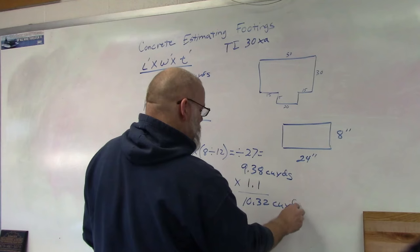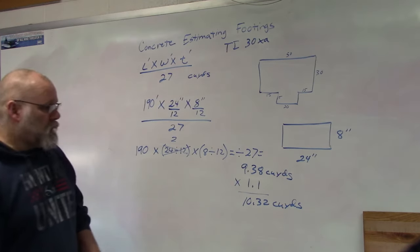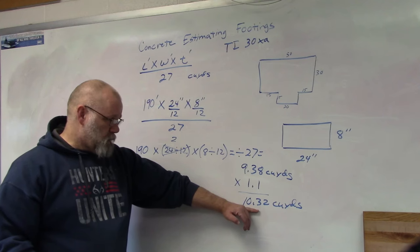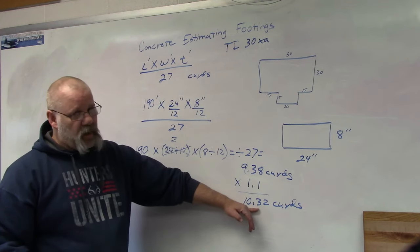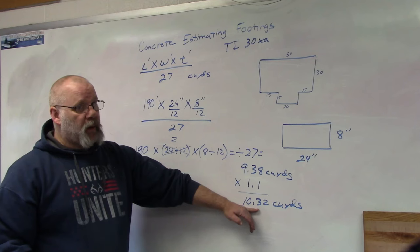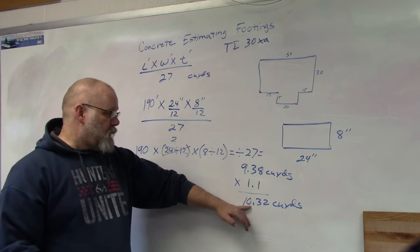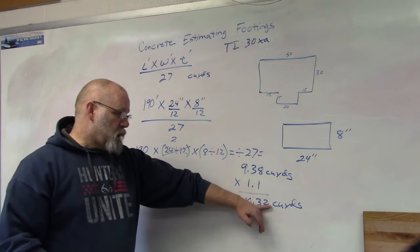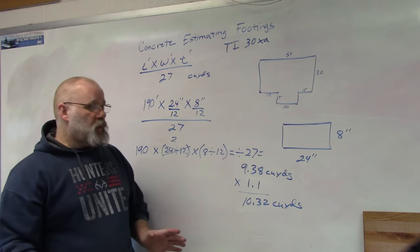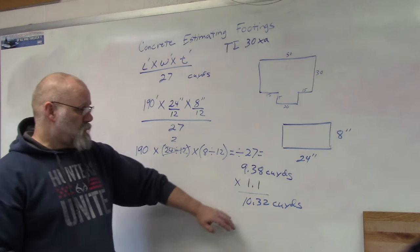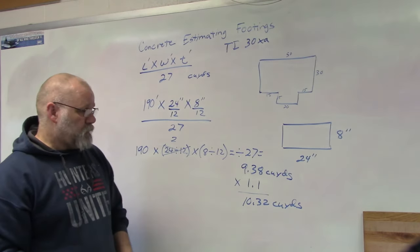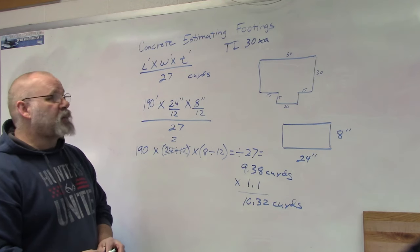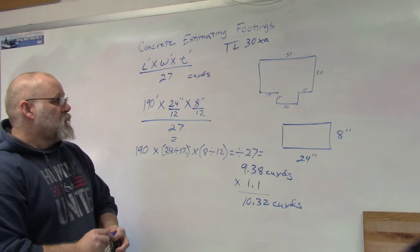10.32 cubic yards. All right, so will your concrete company bring 10.32 yards? Probably not. They're going to round it. So you can either round it down to 10, you can round it up to 10 and a half if they'll do half yards, or round it up to 11, whichever one you think you can get away with. Just make sure that you have enough.